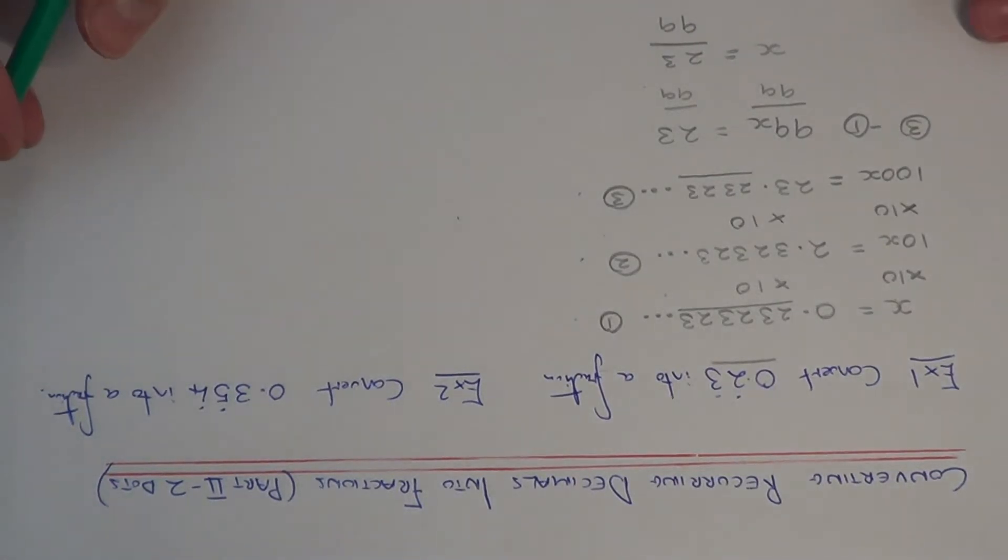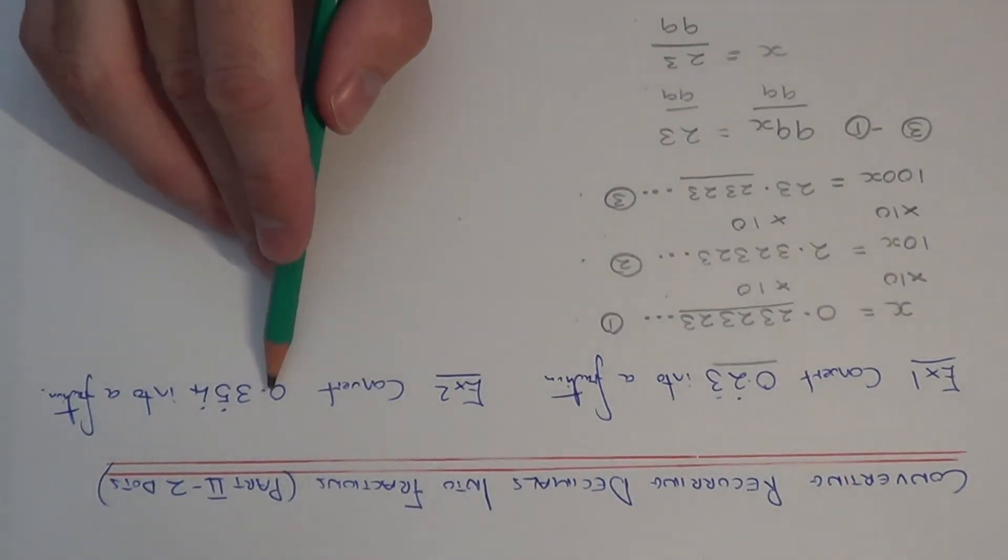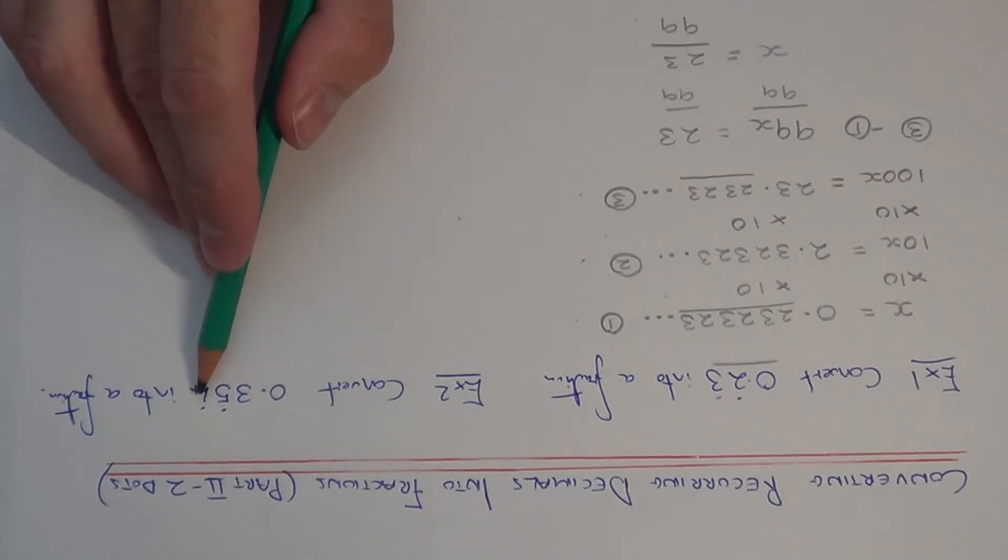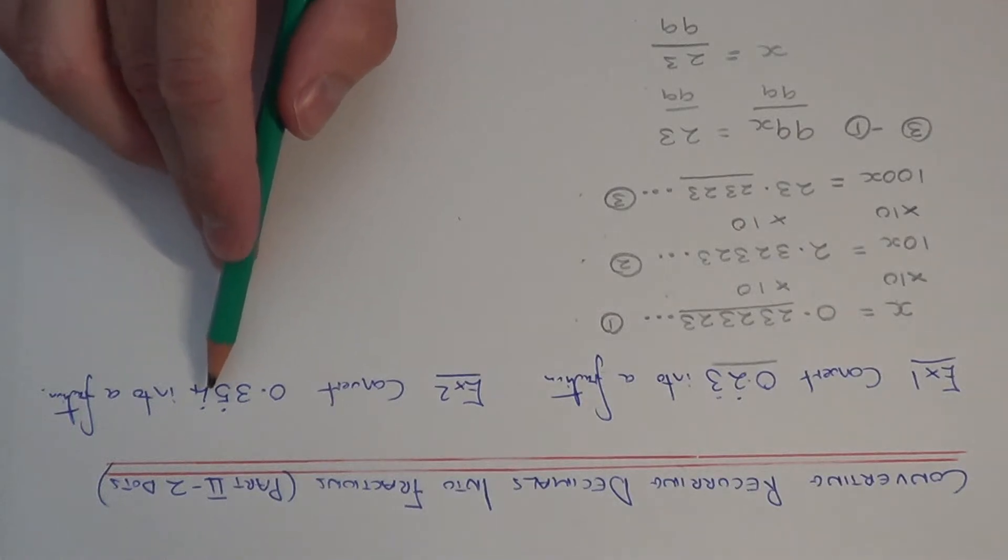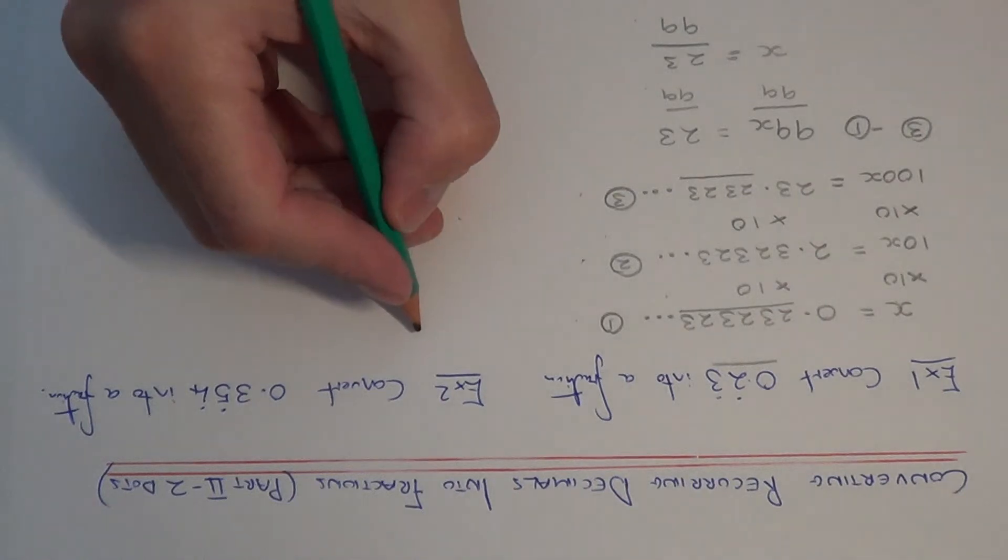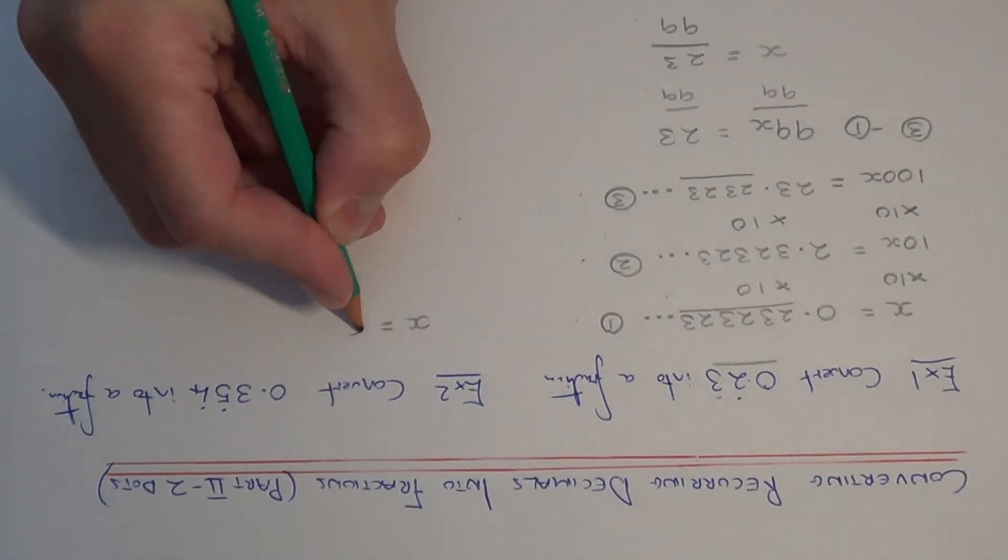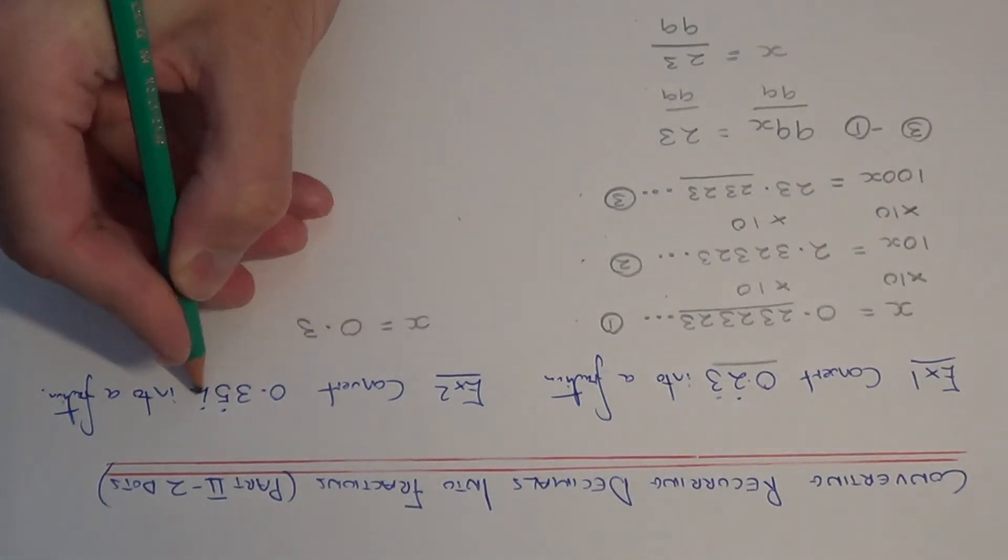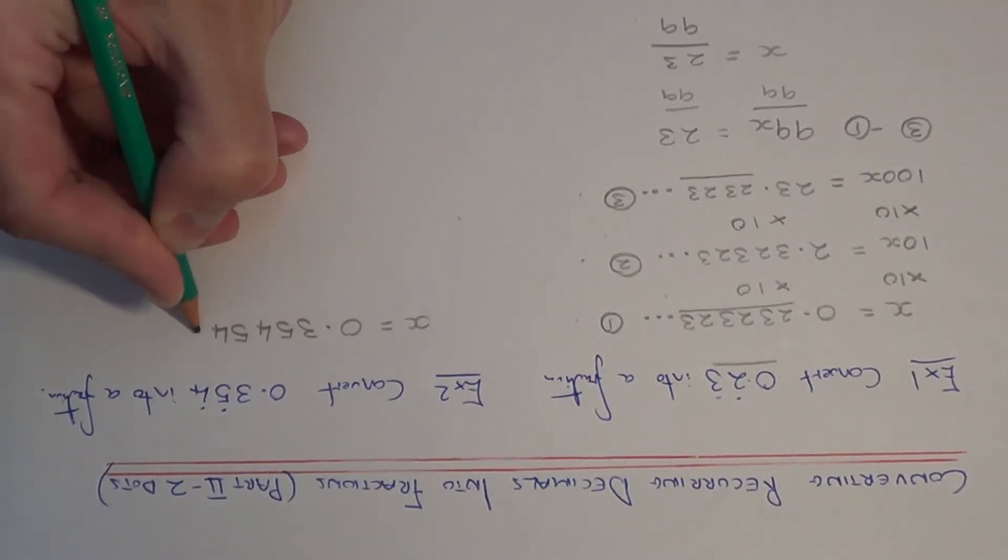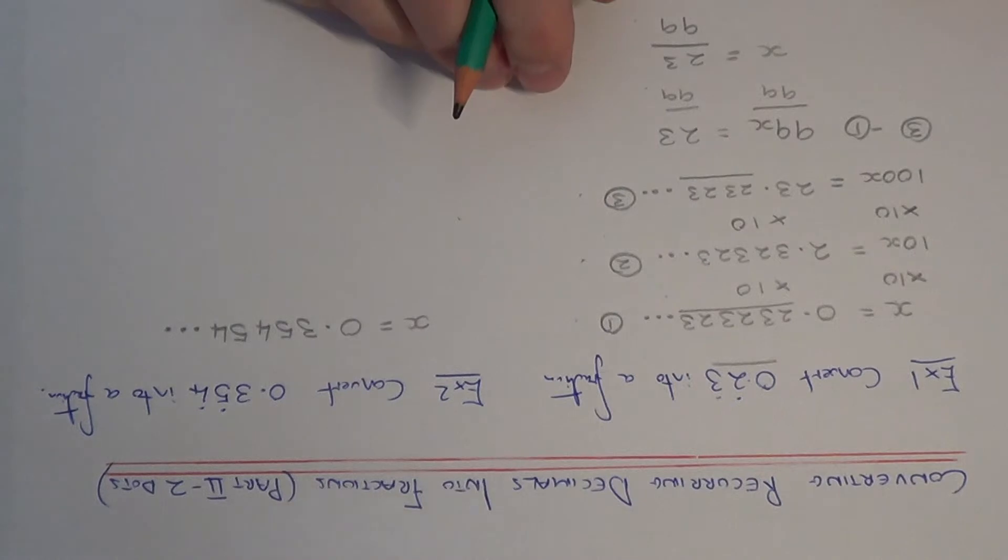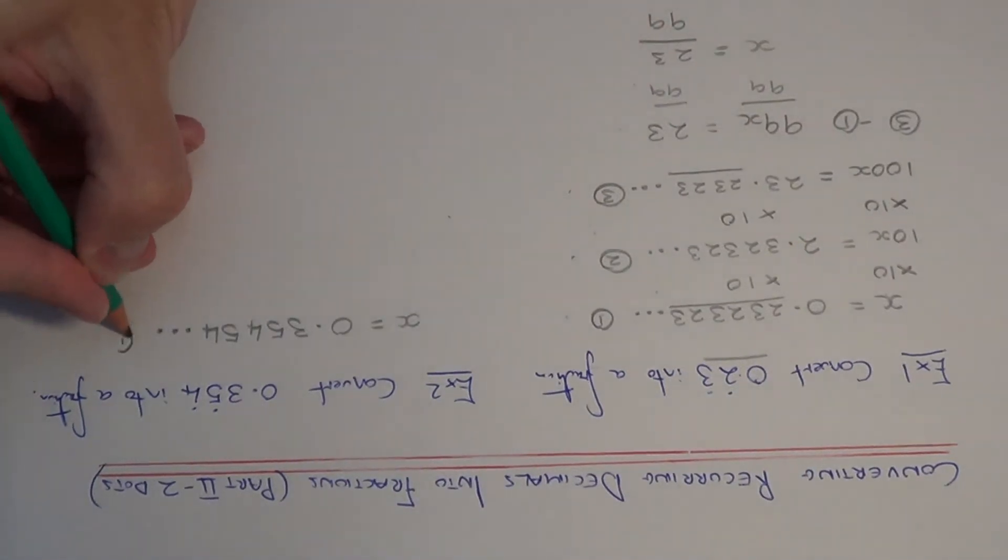So let me have a look at one more example then. So this time I need to convert 0.354. There is a dot on the 5 and a dot on the 4 into a fraction. So everything between the two dots gets repeated. So let me just say x is equal to 0.3, so it is only the 5 and the 4 being repeated at the end. So let me call this equation 1.